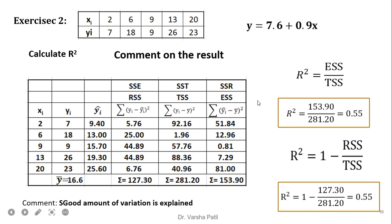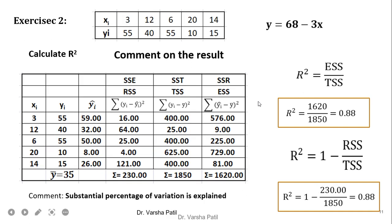Similarly, exercise 3. Again, X is the independent variable and Y is the dependent variable. The equation is Y equals 68 minus 3X. We can find out that the average is 35. We are comparing with the average and with the predicted answer, and we are getting the answer 0.88.